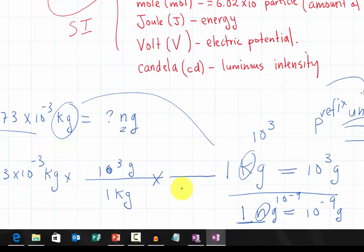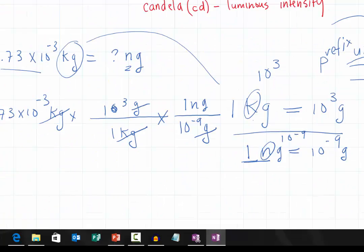If this is gram, the gram is going to be on the bottom. So we have 10 to the negative 9 gram, and the one nanogram going to be on top. And there you have kilogram cancel out, gram cancel out, and give us our answer, that you can easily plug in our calculator.